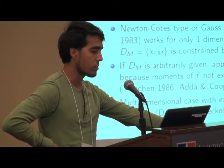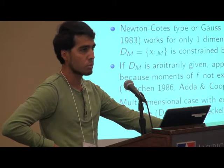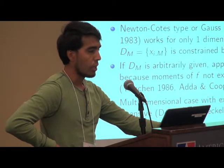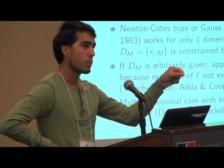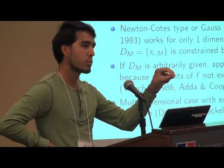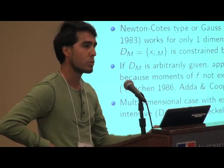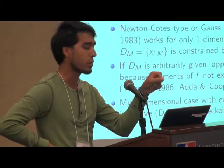But these methods have some disadvantages. First, the quadrature methods like Newton-Cotes or Gauss-type works only in one dimension. And the discrete points are constrained. The choice of discrete points are constrained by the choice of the quadrature method. So, you cannot choose the points, really.